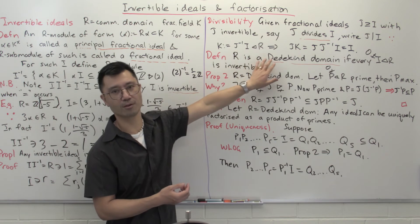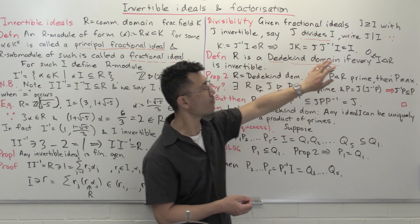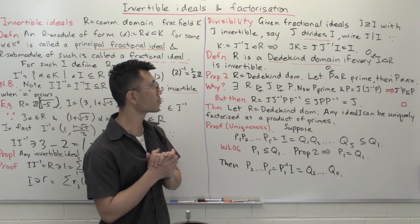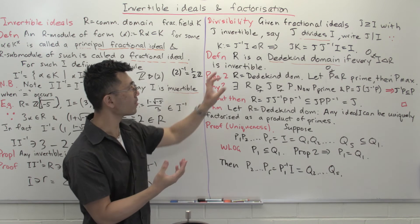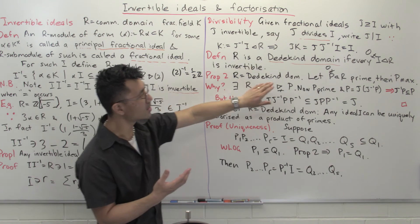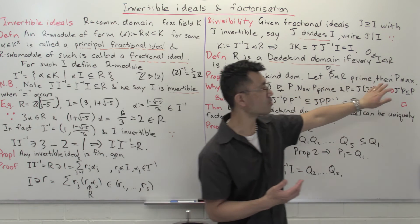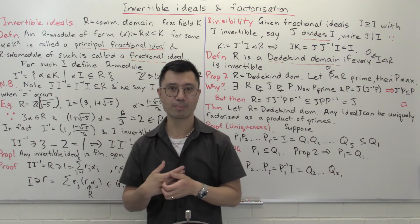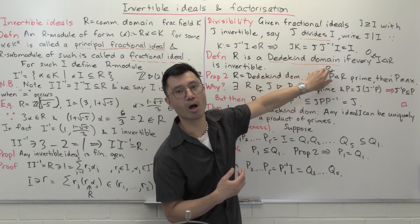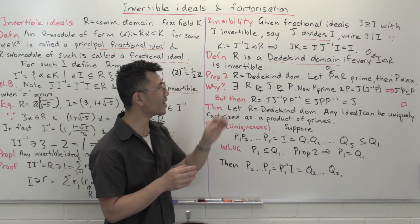So that suggests that if we play around with invertible ideals, we have a nice notion of divisibility, because it really corresponds to the factorization of an ideal. We make the following definition: a commutative domain R is said to be a Dedekind domain if for every non-zero ideal I inside R, it's actually invertible. Let's look at some effects of this definition. Proposition 2 tells you a very nice consequence: if R is a Dedekind domain and P is some non-zero prime inside R, then P actually has to be maximal.